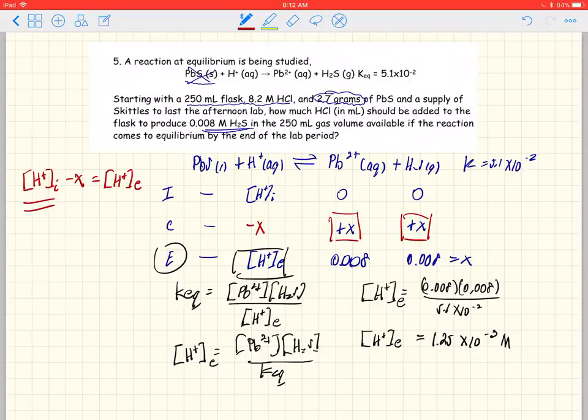So let's add X to both sides. And calculate what we have. So we know what the H+ concentration is at equilibrium. That's 1.25 times 10 to the minus 3, and we want to add 0.008, which is what X is.